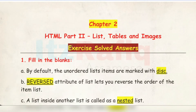Welcome to It's Rappik. In this video I am going to explain the exercise questions of chapter 2 part 2: lists, tables, and images. First, fill in the blanks. A) By default, unordered list items are marked with discs. I am going to use the type attribute of unordered list to create a list, so I am going to use discs for bullets.